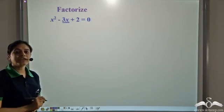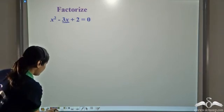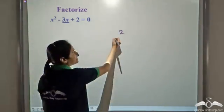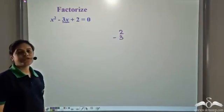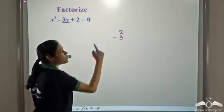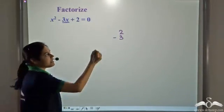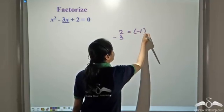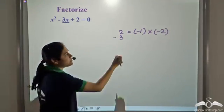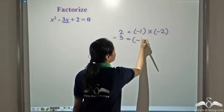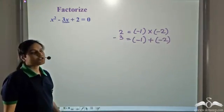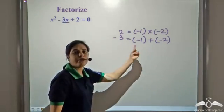We need to find two numbers whose product is 2 and sum is negative 3. So we need to find two numbers such that their sum is negative 3 and product is 2. If we consider negative 1 and negative 2, their product is 2 and their sum is negative 3.